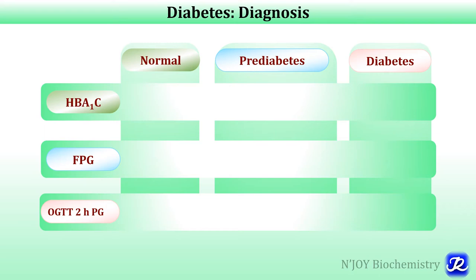For diagnosis of diabetes, four diagnostic tests are currently recommended: measurement of fasting plasma glucose, two-hour post-load plasma glucose after a 75-gram oral glucose tolerance test, HbA1c that is glycated hemoglobin, and a random blood glucose in the presence of signs and symptoms of diabetes. Based on the values of these parameters, individuals are categorized as normal, pre-diabetes, and diabetes. Pre-diabetes is not a clinical entity as such, but these individuals are at increased risk of developing diabetes and cardiovascular diseases.